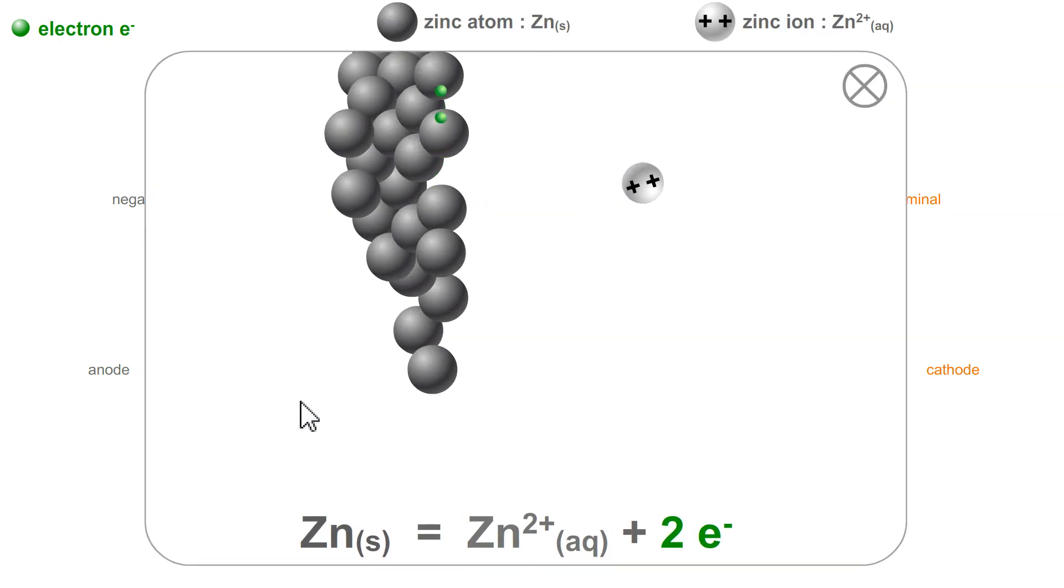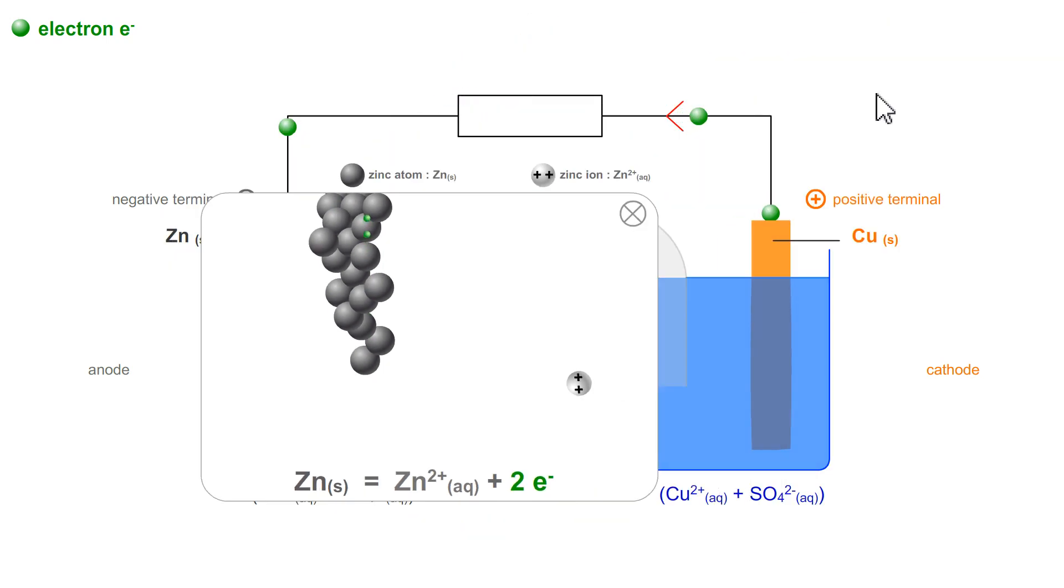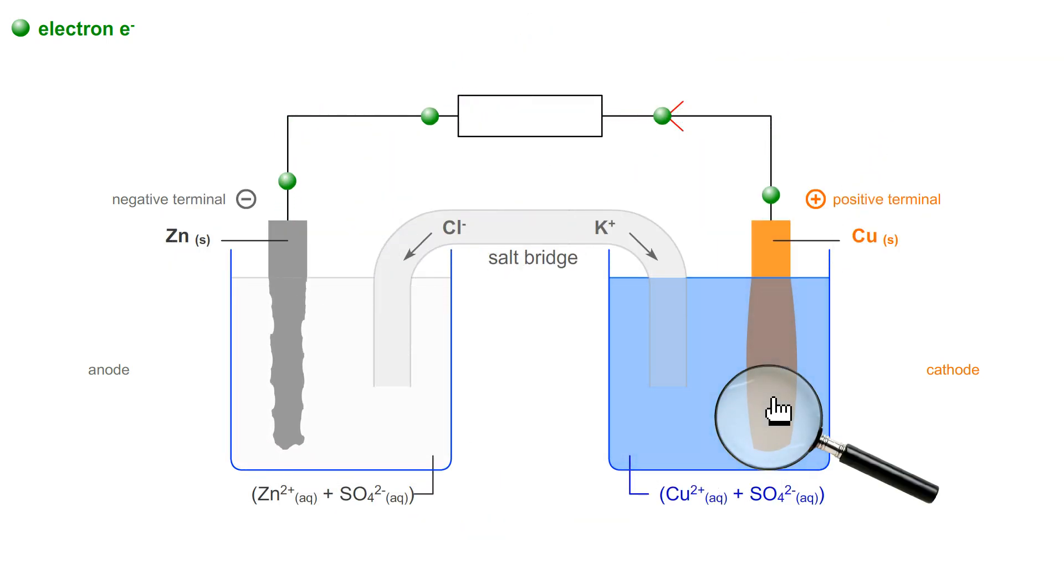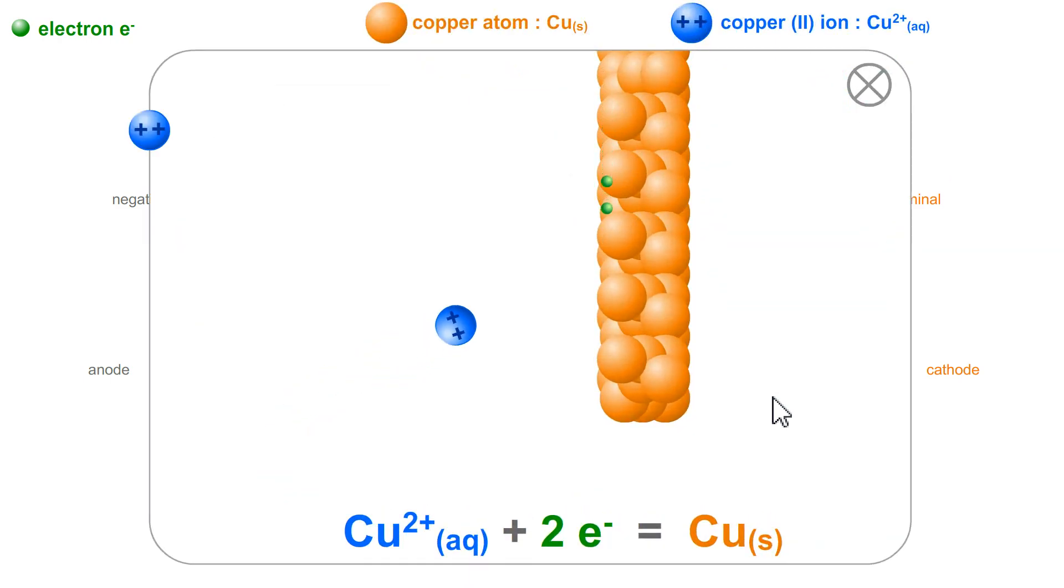There is an oxidation here at the anode, and the electrons are supplied here by the metal zinc. The concentration of zinc ions will increase. Here, the capture of electrons will be done by the oxidant, which is reduced.